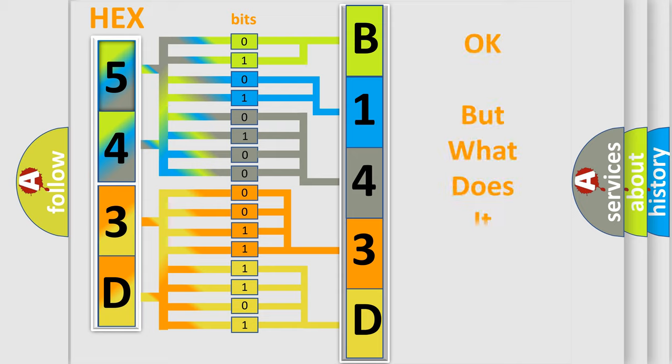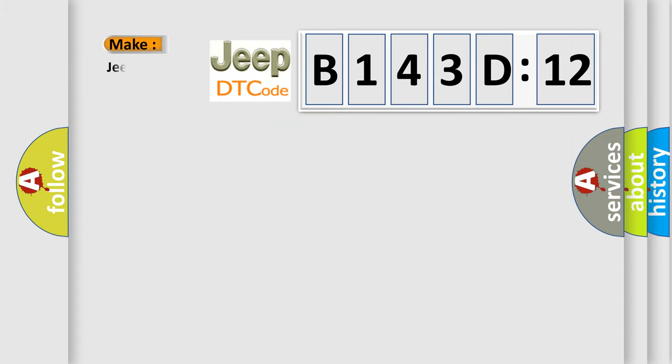We now know in what way the diagnostic tool translates the received information into a more comprehensible format. The number itself does not make sense to us if we cannot assign information about what it actually expresses. So, what does the diagnostic trouble code B143D12 interpret specifically for Jeep car manufacturers?